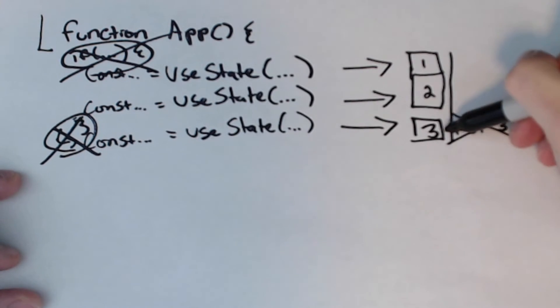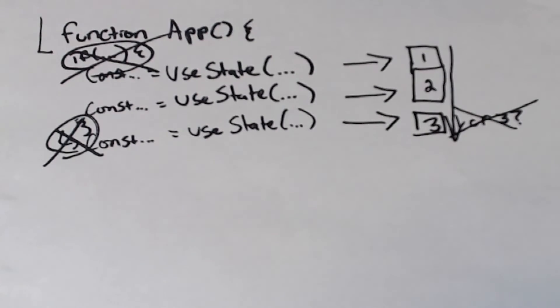It needs to always encounter that useState in the third position so that when it comes in here, it sees everything in the right position and knows which piece of state corresponds to what.